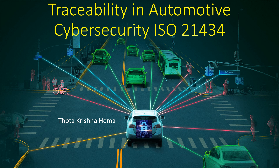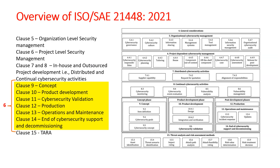This is the overview of ISO 21434:2021. It has 15 clauses, and clauses 5 to 15 — that means 10 clauses — are very crucial. The most important six clauses cover from clause 9 to 14, spanning from the concept phase to the decommissioning phase. The concept phase is the ideation stage where everything is put on paper: item definition, cybersecurity goals, and cybersecurity concept.